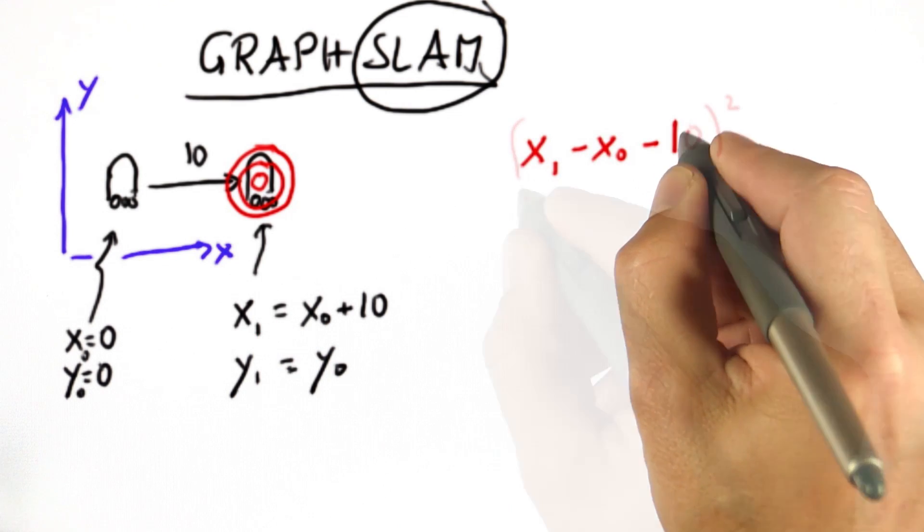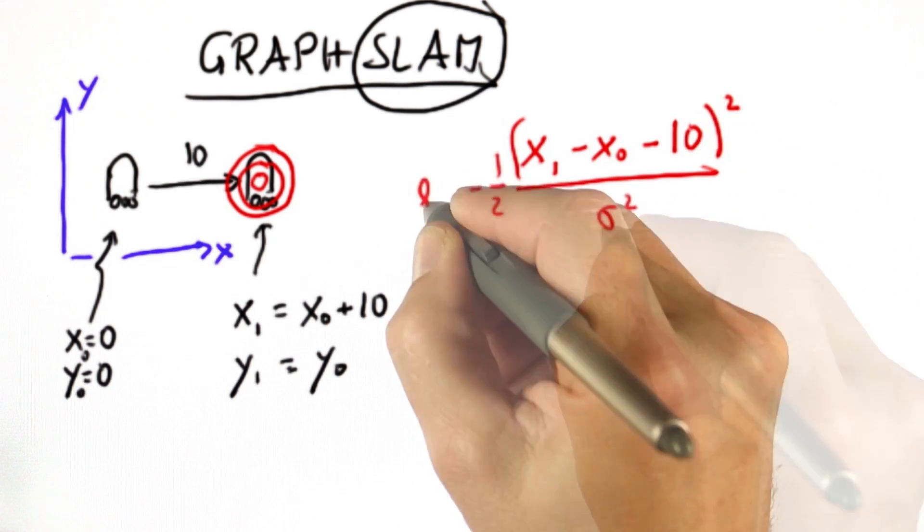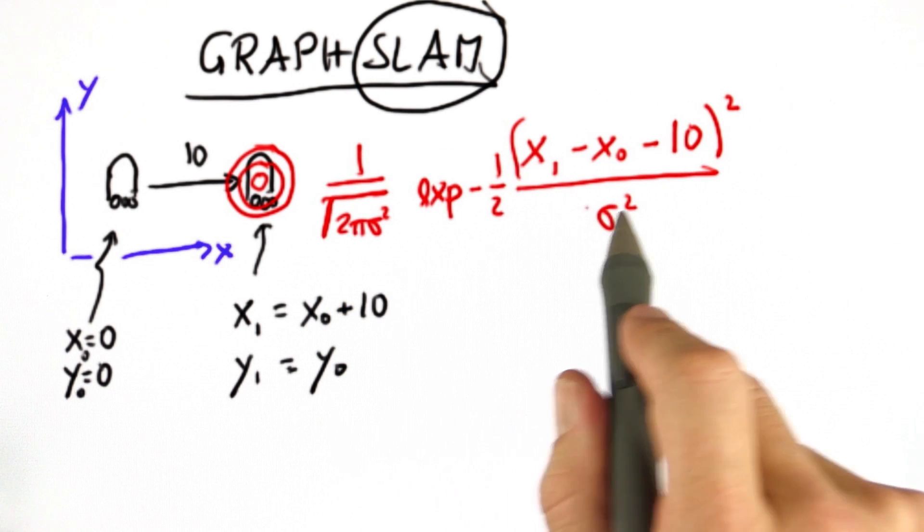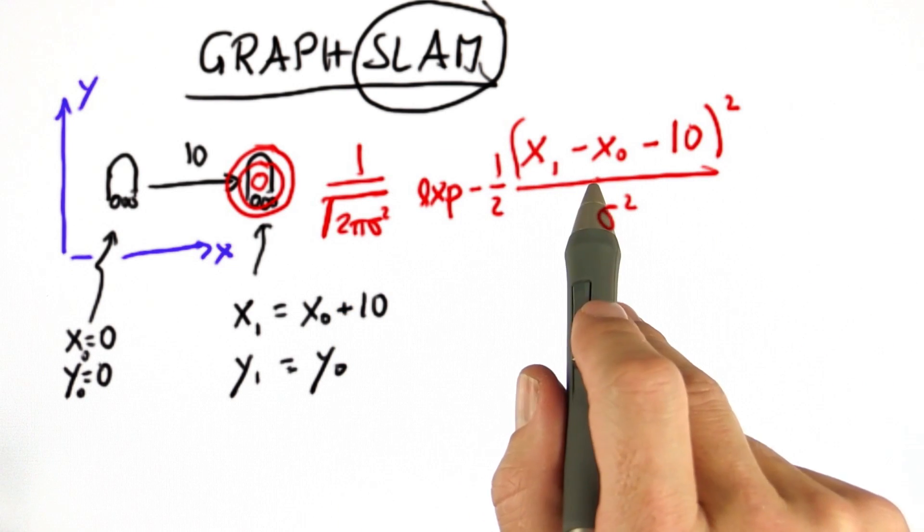x0 and 10, put this into a square format and turn this into a Gaussian, we get a probability distribution that relates x1 and x0.